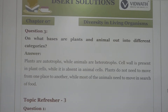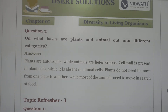Next question: on what basis are plants and animals put into different categories? Plants are autotrophs while animals are heterotrophs. Cell wall is present in plant cells while it is absent in animal cells. Plants do not need to move from one place to another, while most animals need to move in search of food.